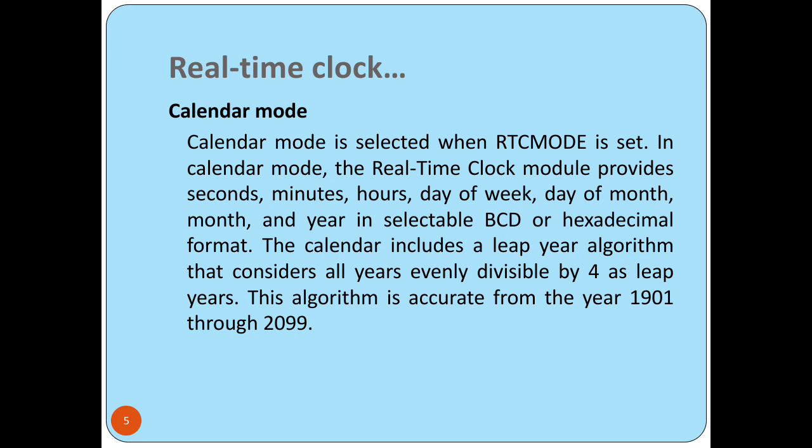In calendar mode, to operate the real-time clock you set the RTC mode bit to 1. It then provides time in terms of seconds, minutes, days, day of week, month, and year — including normal year and leap year. An algorithm can be implemented in the real-time clock to determine if a year is a leap year (divisible by 4) or a non-leap year.